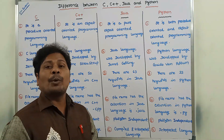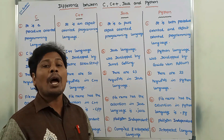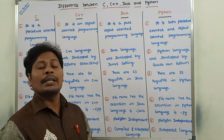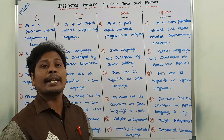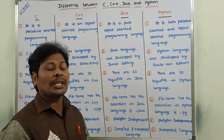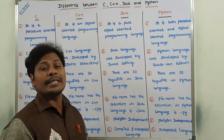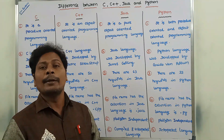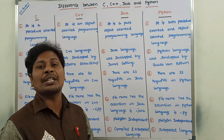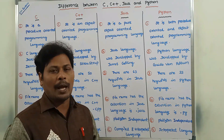Pure object oriented programming language means that in Java, without using a class we cannot create any single program. Hence we can say that Java is a pure object oriented programming language. But in C++ and Python, without using a class also we can create programs. Hence we can say that C++ and Python are only object oriented programming languages, whereas Java is a pure object oriented programming language.